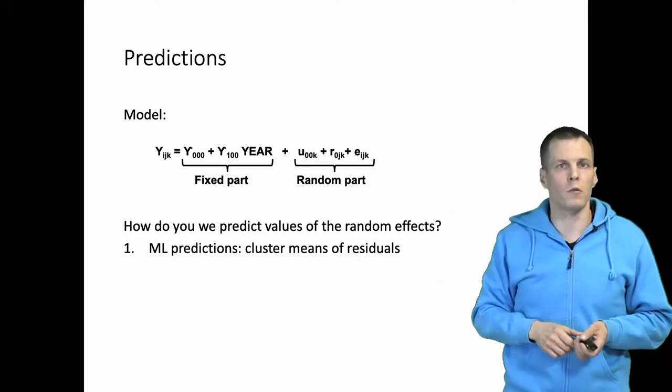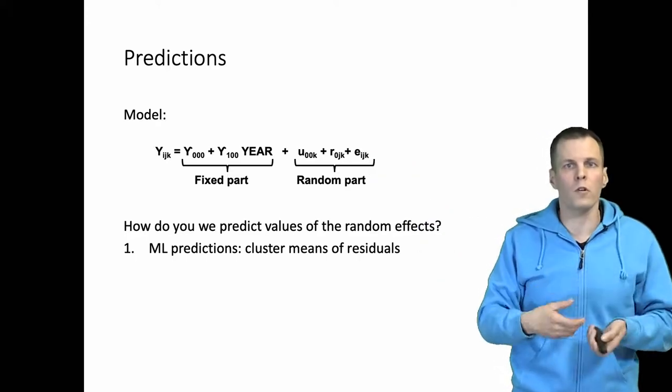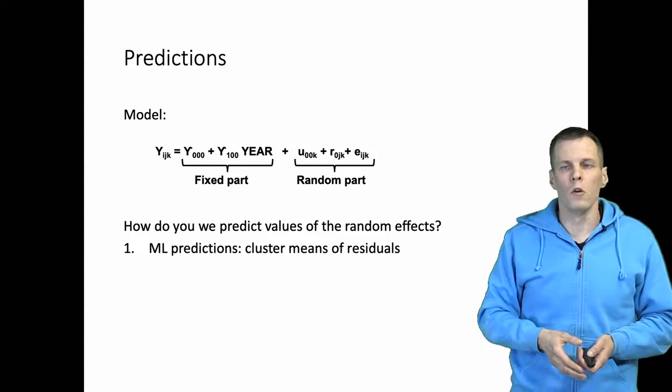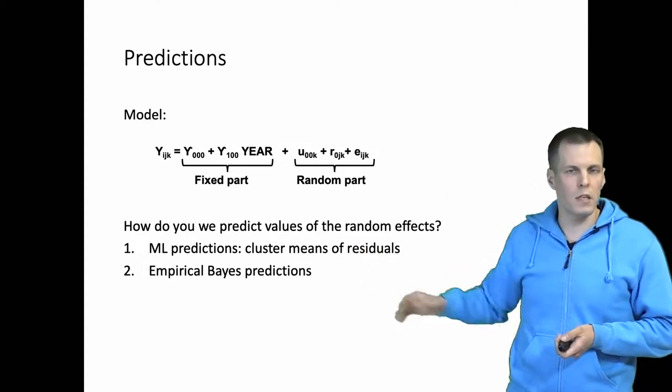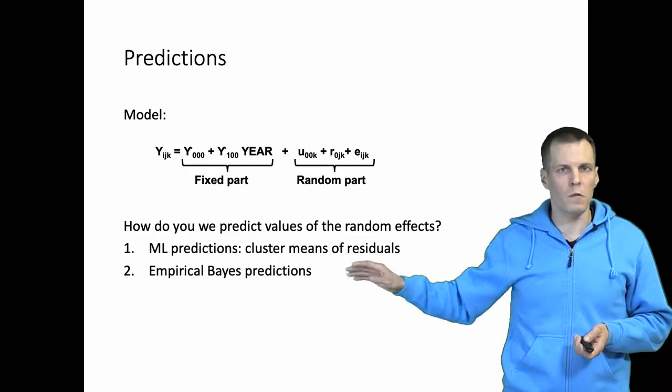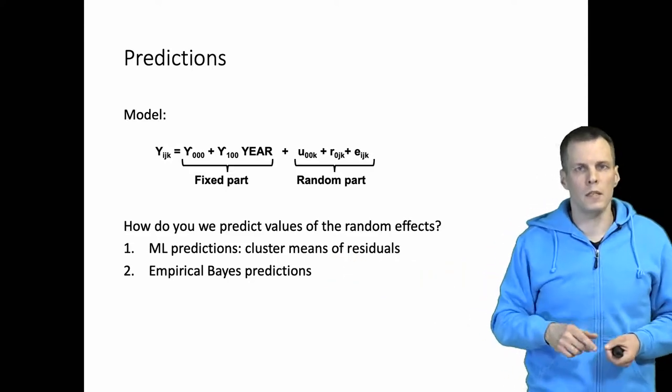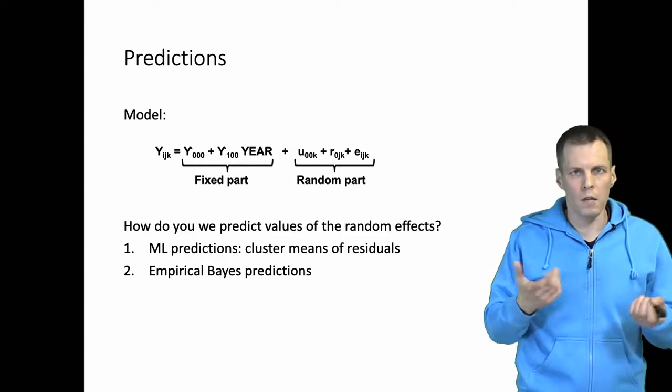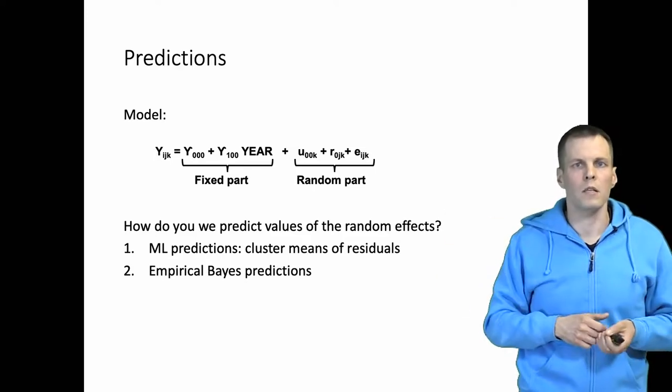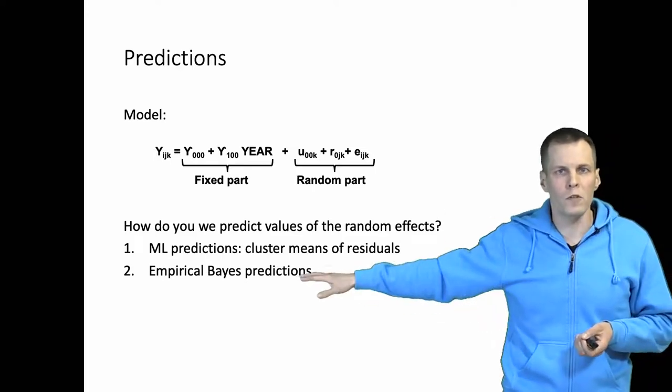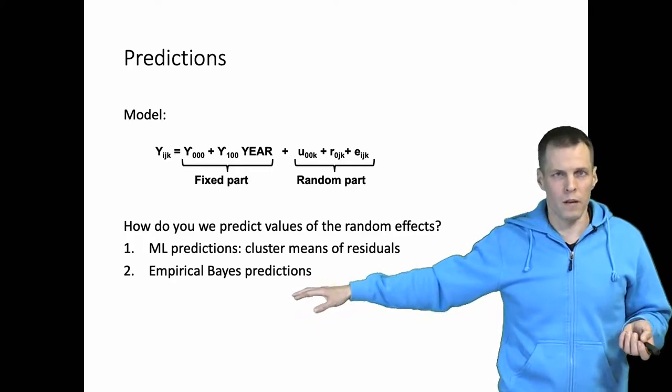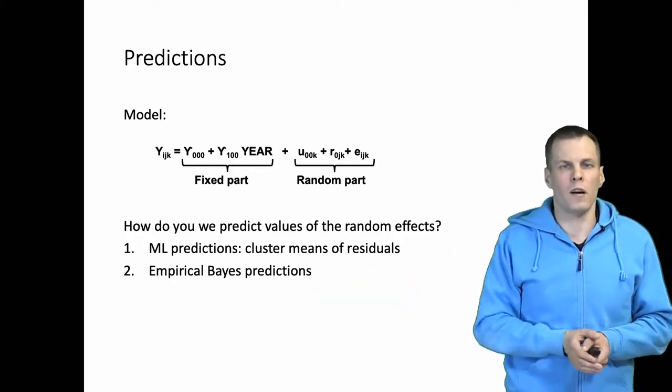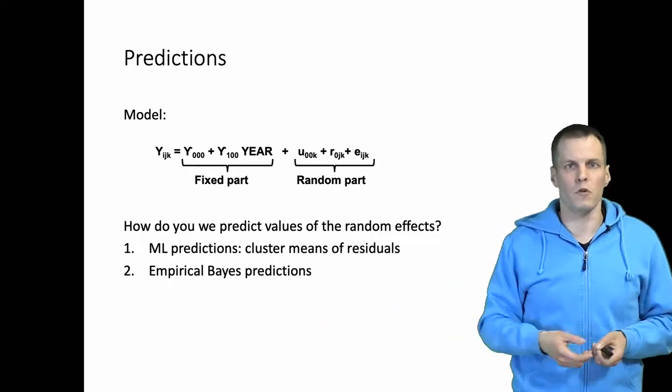And to account for this variance inflation we have another technique called empirical Bayes predictions and this is something that sometimes confuses people because they see the word Bayes here, and while the Bayesian theorem is kind of used in estimation they get confused—is this actual Bayes estimation where I have to define priors and where I have to interpret the posterior distribution and so on?